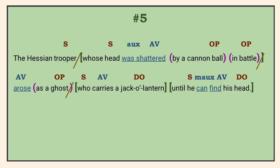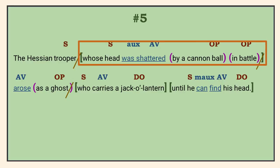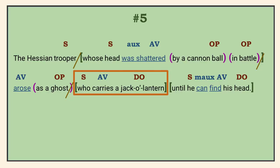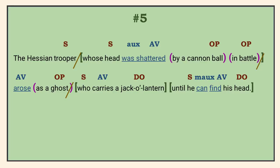Number 5. In this sentence, the first dependent clause identifies which specific trooper arises as a ghost. Not just anyone becomes the headless horseman, so we need the information in the clause — no commas. 'As a ghost' is a prepositional phrase that tells in what manner he arose. The word 'as' can be both a preposition and a subordinating conjunction; we know it's a preposition here because it doesn't have a subject-verb combination with it. 'Who carries a jack-o'-lantern' identifies what kind of ghost — it's a key part of the sentence's meaning, so no commas. The adverb clause at the end of the sentence modifies 'carries,' telling when, and since it follows the verb it modifies, we don't put a comma in front of it.